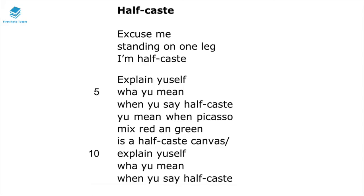I'll begin by reading the first two stanzas and stopping every so often to explain key literary techniques. Excuse me, standing on one leg. I'm half-caste. Explain yourself what you mean when you say half-caste. You mean when Picasso mixed red and green, is a half-caste canvas. Explain yourself what you mean when you say half-caste.